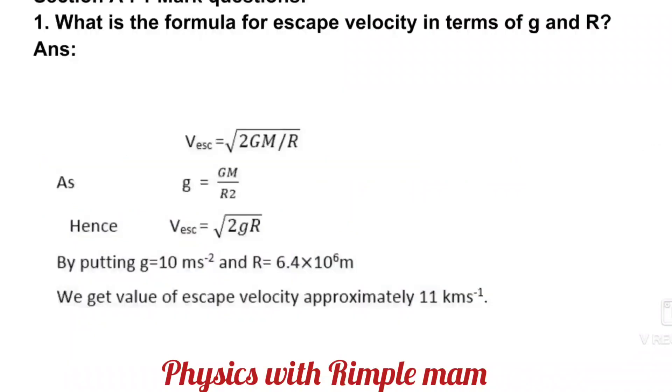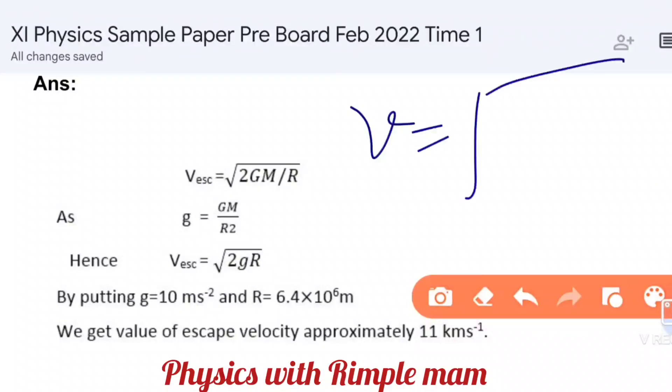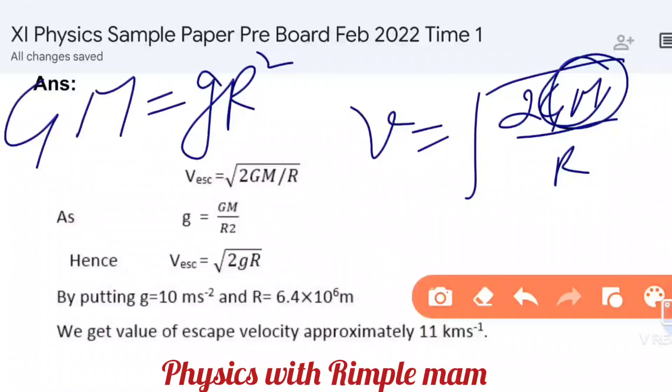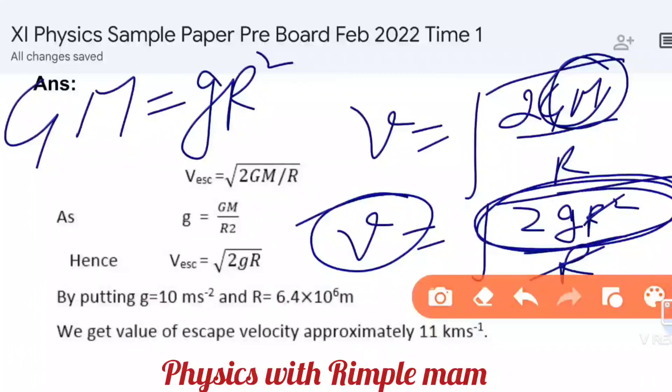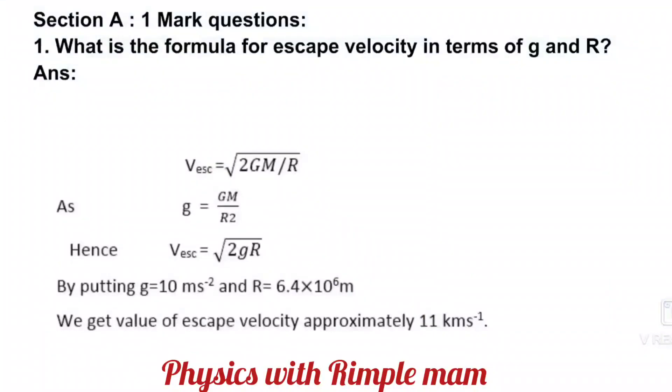The first question is: What is the formula for escape velocity in terms of g and r? You need to write both formulas for escape velocity. One formula is v = √(2gr), but if they give capital R, there's another formula: v = √(2GM/R). Since GM equals gr², you can write gr²/R, where one r cancels out, so the second formula becomes v = √(2gr). We need to write both formulas.